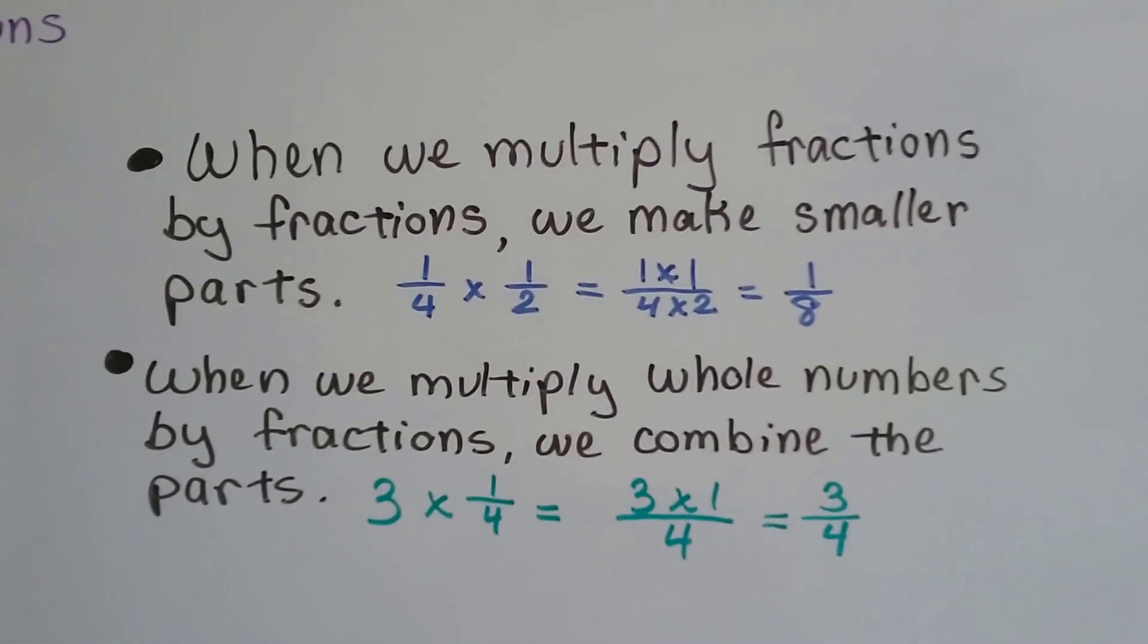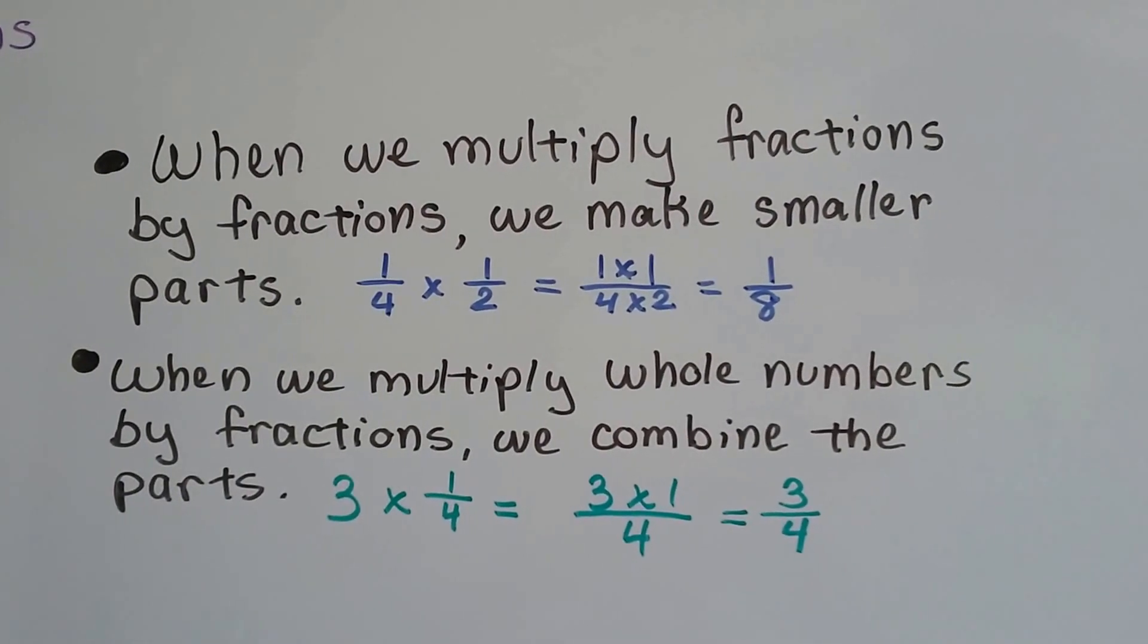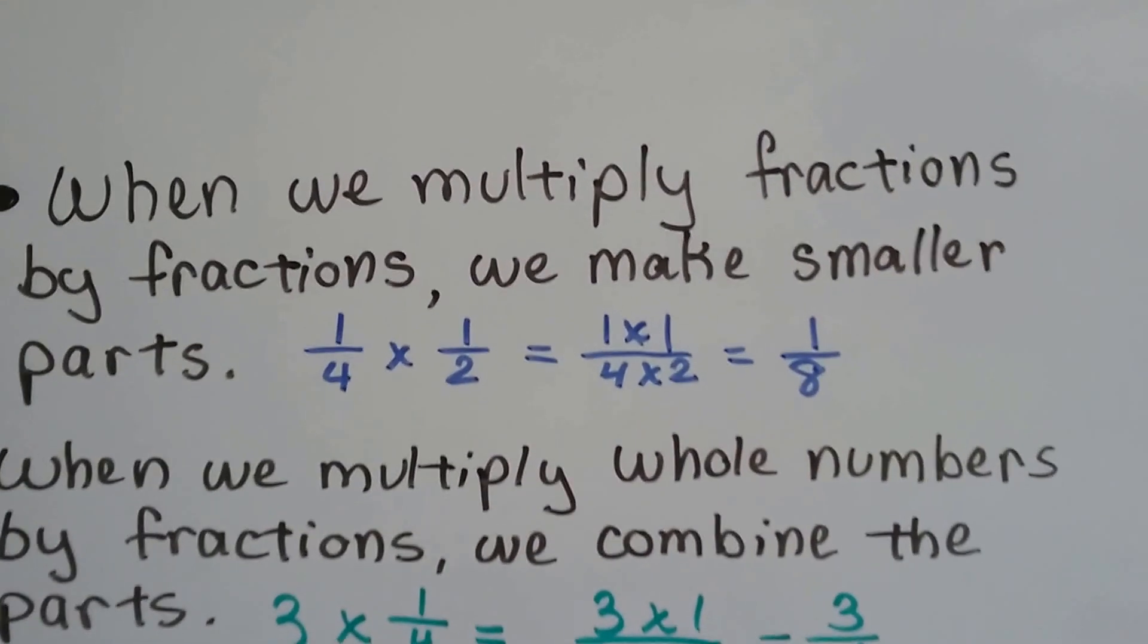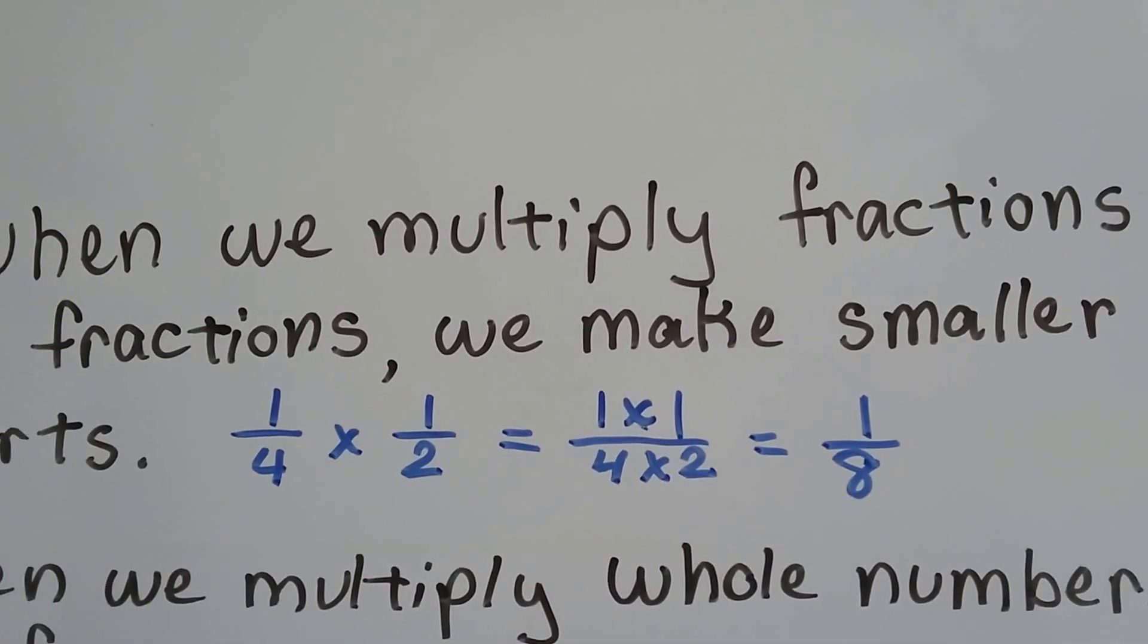When we multiply fractions by fractions, we make smaller parts. 1/4 times 1/2 is 1 times 1 over 4 times 2. That'll equal 1/8.